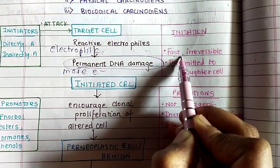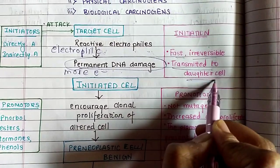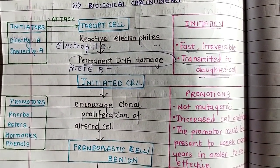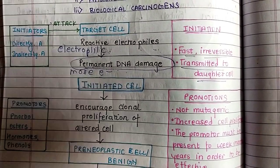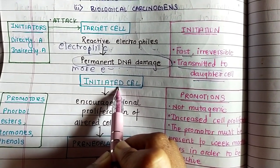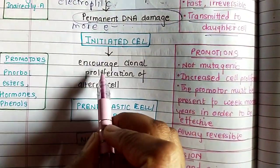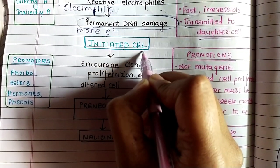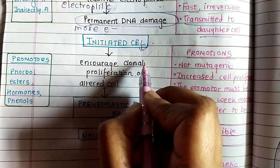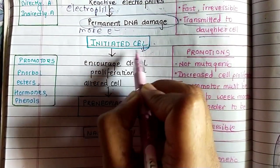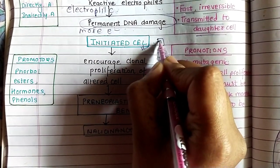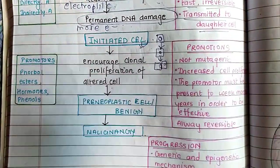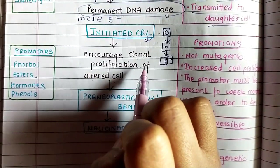In initiation, the process is fast, irreversible, and transmitted to daughter cells. Once there is damage to the DNA, the cell is initiated and is now called an initiated cell. It then encourages the clonal proliferation of the altered cell — the initiated cell transfers the tumorigenic information to other clonal cells, that is to daughter cells, which are formed as tumor cells.